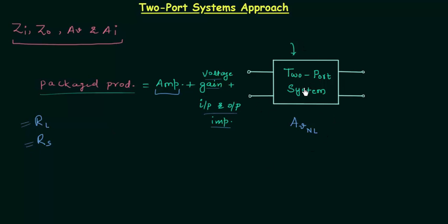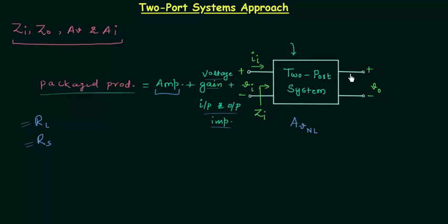This box represents the two-port system, which is the BJT amplifier. The input voltage is VI, the input current is II, and the input impedance is ZI. The output voltage is VO, the output current is IO, and the output impedance is ZO.